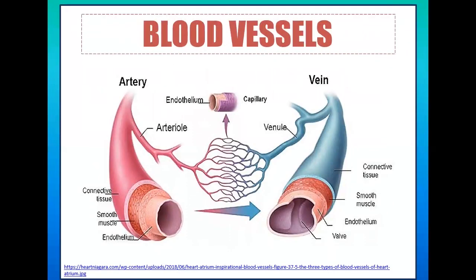Looking at the structure using an illustration: an artery is composed of three tissue layers — connective tissue, smooth muscle, and endothelium on the inside. Comparing to a road system, arteries are considered superhighways because they are large vessels. All arteries, except the pulmonary arteries, carry oxygen-rich blood away from the heart to other parts of the body.